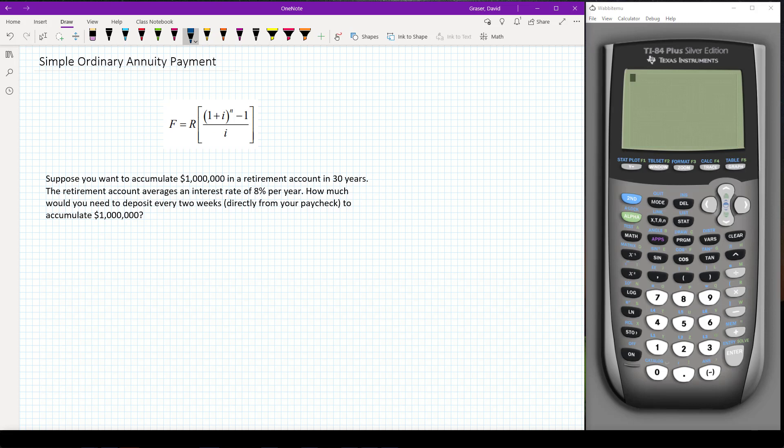So we're going to start from our simple ordinary annuity formula. Remember ordinary means that we're going to be making payments at the end of the period and a simple annuity means that our compounding period is the same as our payment period. So our F is our future value, the R is the payment, I is the interest rate per period, and N is the number of periods.